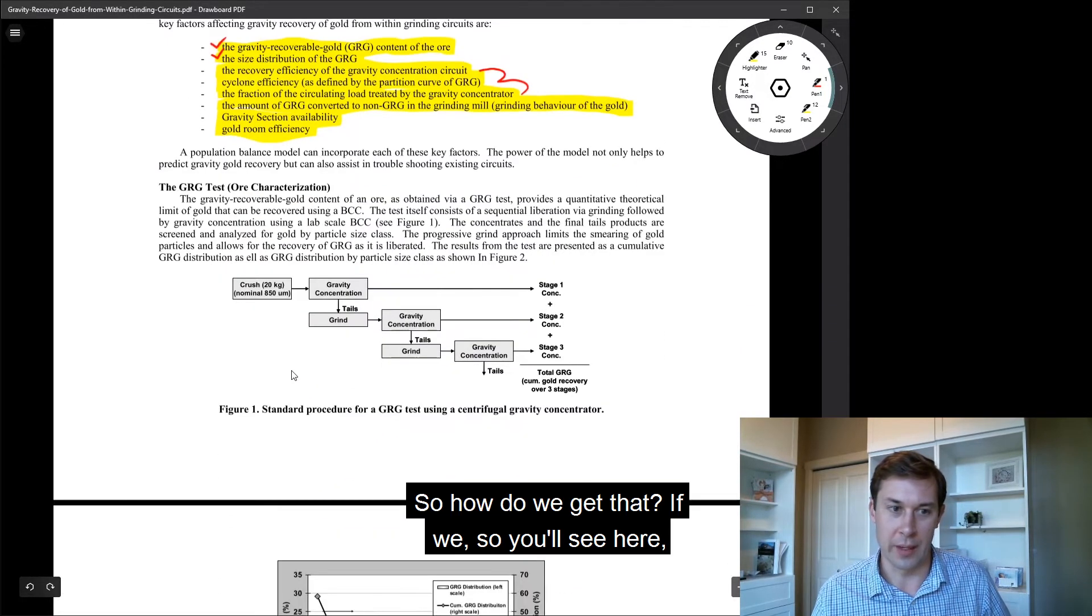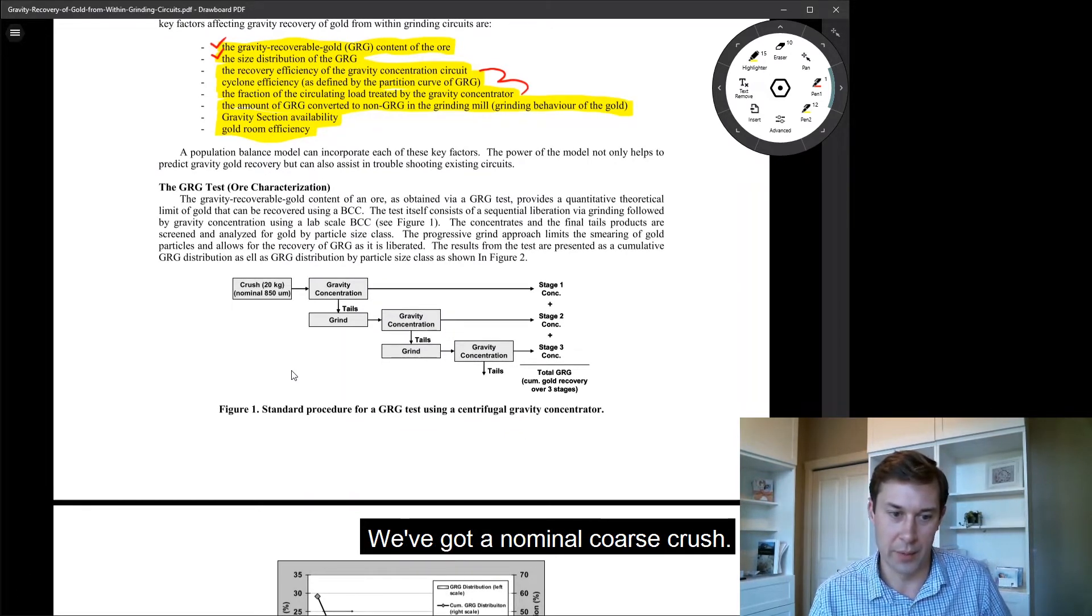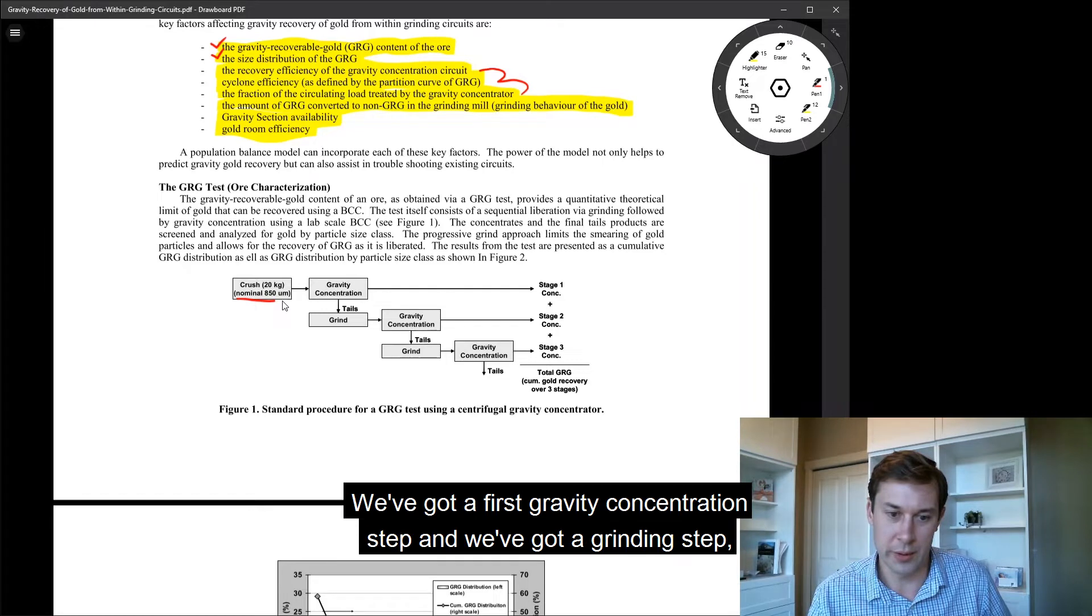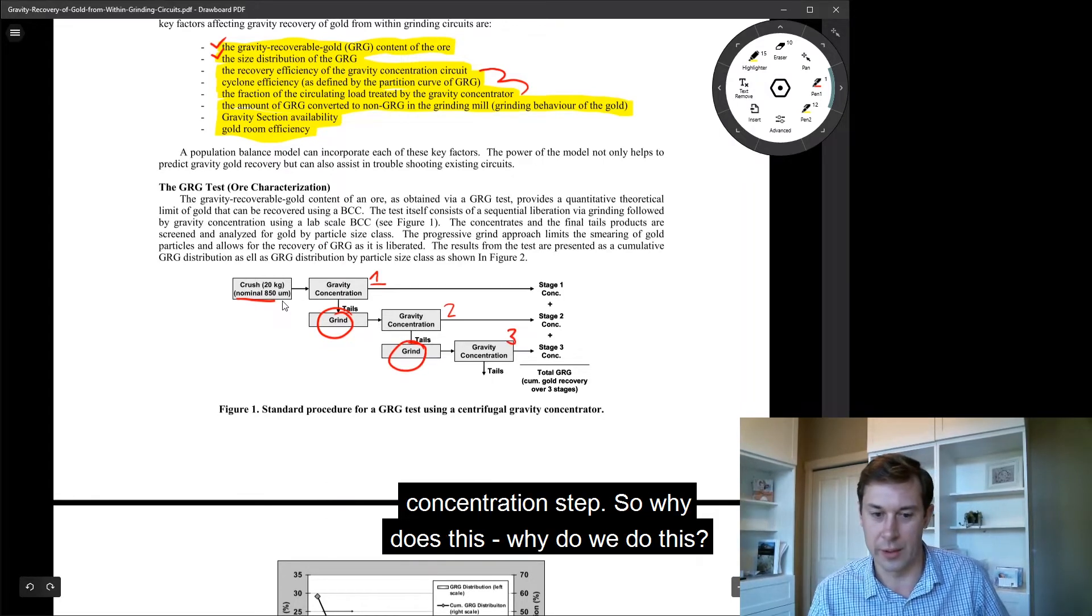So how do we get that? You'll see here there's a multi-stage test. We've got a nominal coarse crush, a first gravity concentration step, a grinding step, then a second gravity concentration step and a grinding step, and a third gravity concentration step.